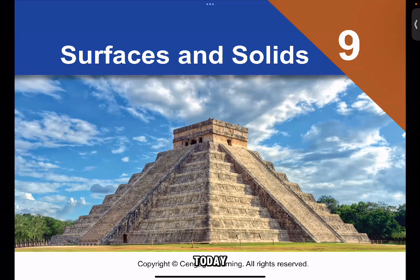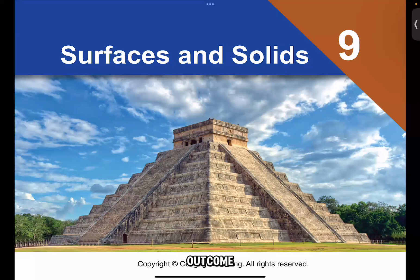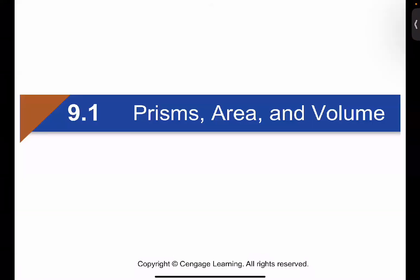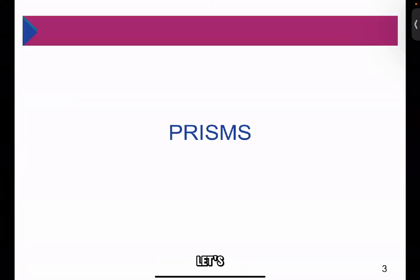Hello, good day everyone. Today, we're going to discuss surfaces and solids. This is under the third course outcome of trigonometry with solid mensuration. At this stage, we're now going to discuss prisms, area, and volume. Let's start with the most basic of all of these solids — let's have prisms.